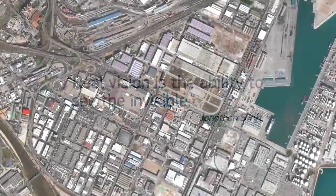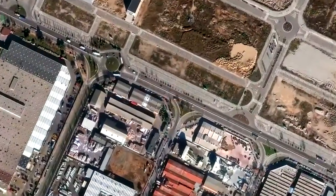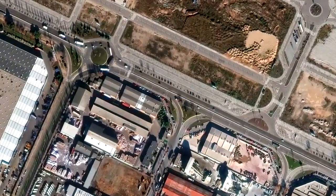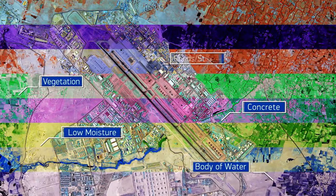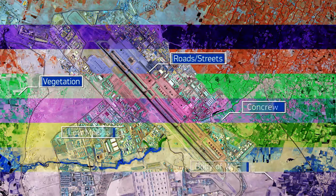We've previously discussed spatial resolution, or the size of a pixel in an image. Today, we're discussing spectral resolution, which describes what you can see and interpret within that pixel.